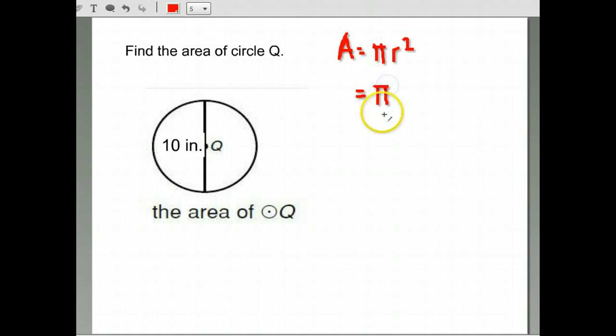That gives us pi times—do we have the radius? In this case, no, we don't. We have the diameter, they give us all the way across. We just want the radius, which is half of that. So we go 10 divided by 2 is 5. We have a radius of 5.